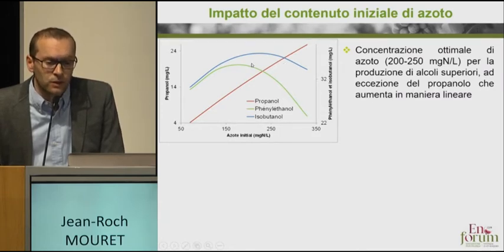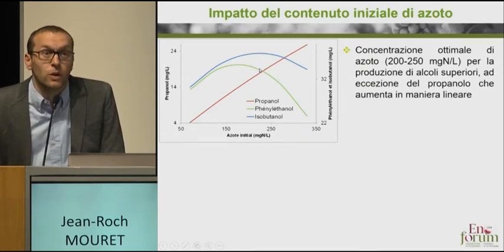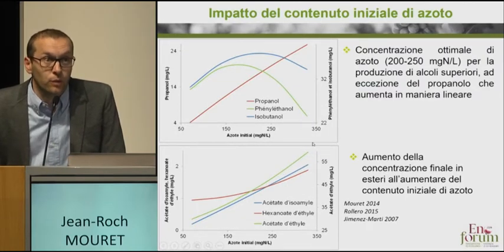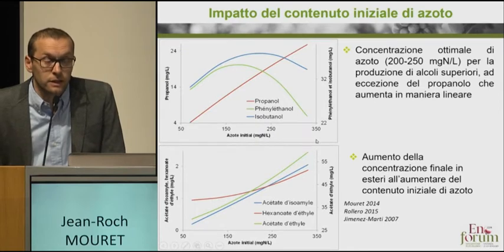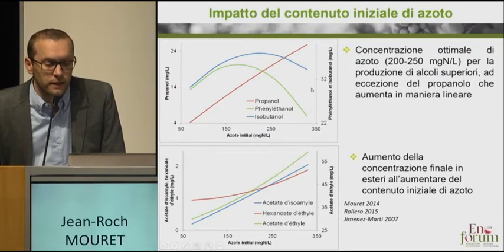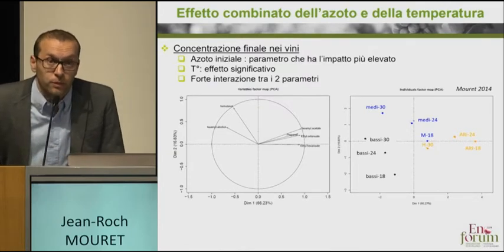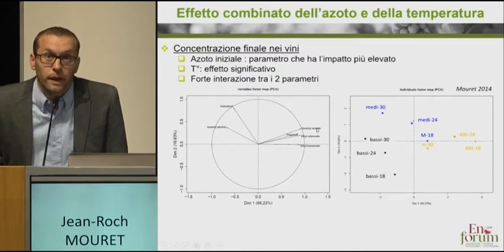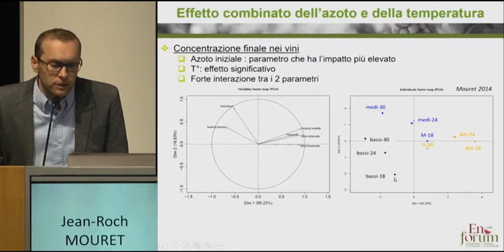Another parameter we investigated is the initial concentration of nitrogen. With the exception of propanol, there is an ideal concentration at which alcohol production reaches a peak, between 200 and 250 milligrams of nitrogen — beyond that point, there is a reduction. The opposite holds true for all esters: the higher the initial content of nitrogen, the higher the content of esters at the end. So if you supply a lot of nitrogen, you have a sharp increase in esters. Once again, as with temperature, you change the style of the wine.